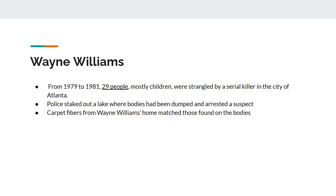A notorious case where hair and fiber analysis was critical in solving the crime was from 1979 to 1981. 29 people, mostly children, were strangled by a serial killer in Atlanta, Georgia. They staked out a lake where the bodies had been dumped and arrested a suspect on circumstantial evidence probable cause. What really led to the conviction was carpet fibers from Wayne Williams' home matched on recently recovered bodies from the lake, along with animal hair from his dog.